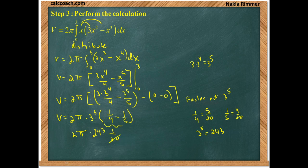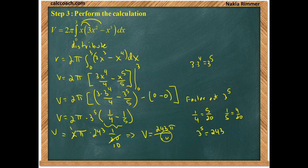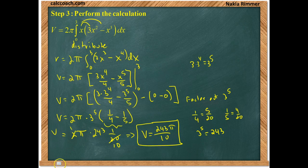And finally then, we can take this 20 and turn the 2 into a 1. At the same time, turning the 20 into a 10. Our final answer is that the volume is equal to 243 pi over 10, whatever unit you have cubed.